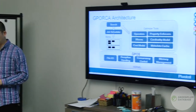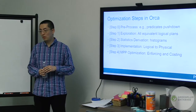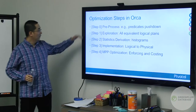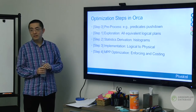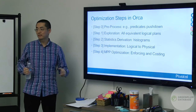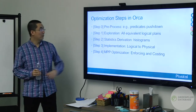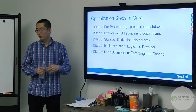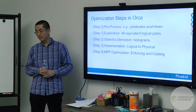In general, there are five steps for ORCA to optimize a query plan. Step zero is preprocessing: we're not creating more search space yet, but massaging the plan to a form that's heuristically always better. For example, predicate pushdown happens in preprocessing.